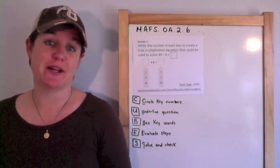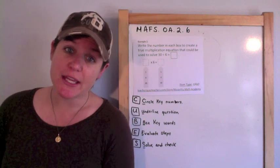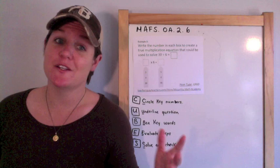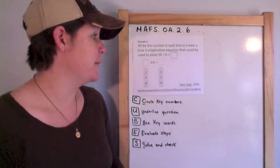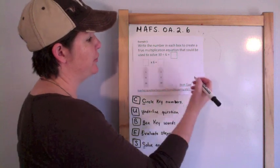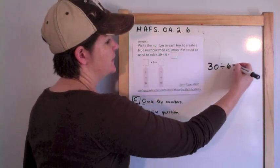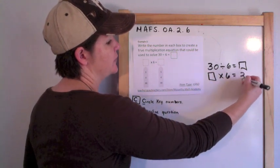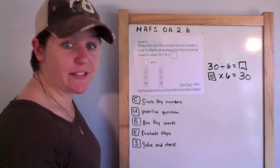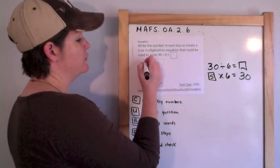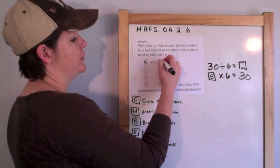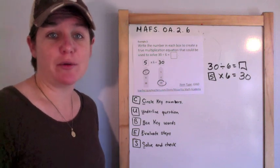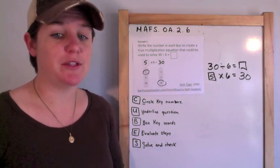This is a grid response, which stands for Graphic Response Item Display. I'm not really sure how they're going to grade these on the FSA, but I'm going to teach you just to be sure that you know how to do it if they come up. So what would go in here? 30 divided by 6 equals what?